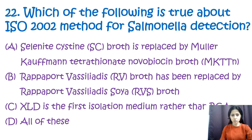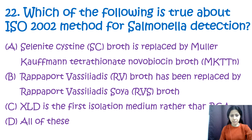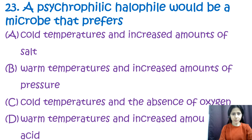Question number twenty-two: which of the following is true about the ISO 2002 method for Salmonella detection? Option A: selenite cysteine broth is replaced by Muller-Kaufmann tetrathionate novobiocin broth (MKTT-n); option B: Rappaport-Vassiliadis broth has been replaced by Rappaport-Vassiliadis soya (RVS) broth; option C: XLD is the first isolation medium rather than BGA; option D: all of these. The correct answer is option D — all of these.